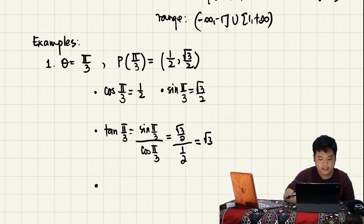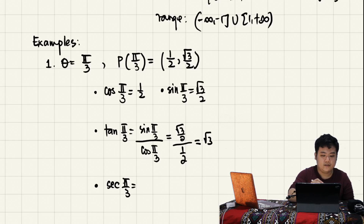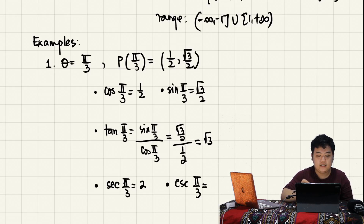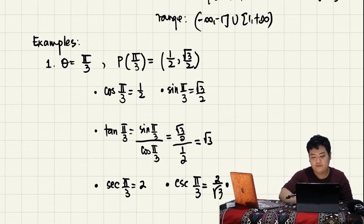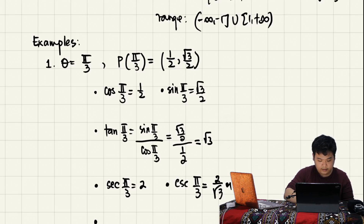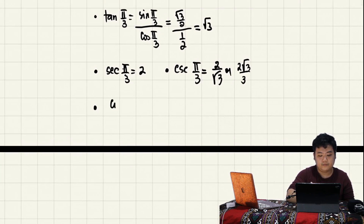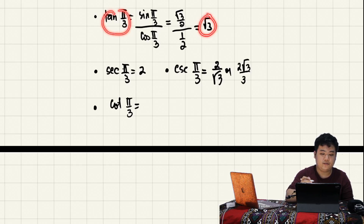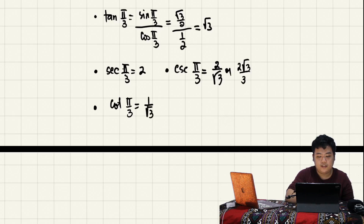We can easily find the remaining values. Secant of pi over 3 is the reciprocal of cosine pi over 3, so that is 2. Cosecant of pi over 3 is the reciprocal of sine pi over 3, giving 2 over square root of 3, or rationalized: 2 square root of 3 over 3. Cotangent of pi over 3 is the reciprocal of tangent pi over 3 — that is 1 over square root of 3, or rationalized: square root of 3 over 3.